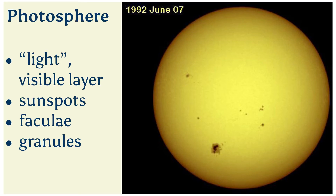When we look at the center of the disk of the sun, we look straight in and see somewhat hotter and brighter regions. When we look at the limb or edge, it looks darker because that light is taking a slanting path through this layer, so we only see the upper cooler and dimmer regions. This explains the limb darkening that appears as a darkening of the solar disk near that limb.